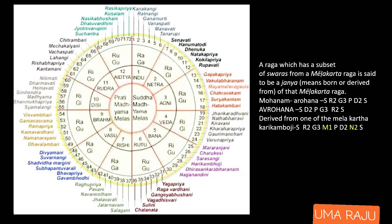The beauty of these 72 Melakarta ragas is that they are sampurna — all swaras are present in each one. From these Melakarta ragas, so many Janya ragas are derived. Thank you.